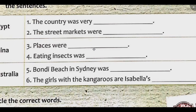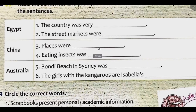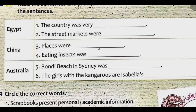In the second part of my trip, I was in three countries. First stop: Egypt — a very interesting country. The street markets were so noisy. Look at the picture of Cairo in my scrapbook. Can you see the pyramids in the background? The plan was to go to Thailand, but there was no time. So then, China. The places were beautiful.